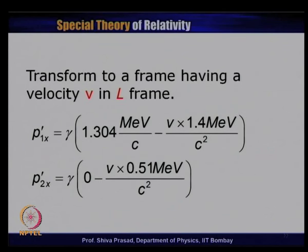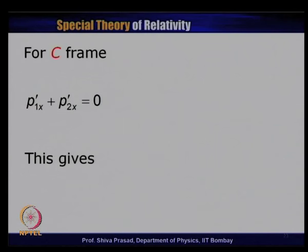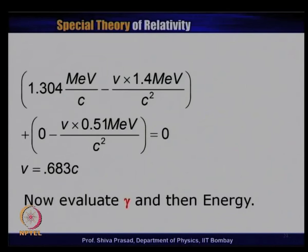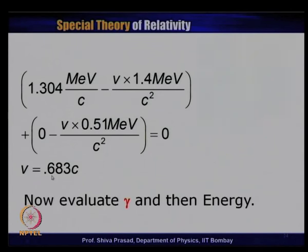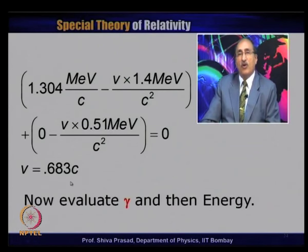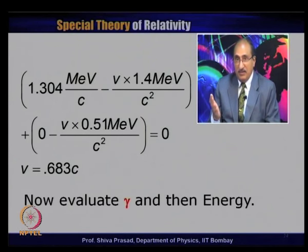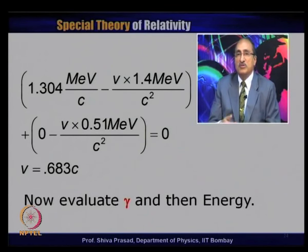The energy and momenta can be obtained in the laboratory frame using the standard energy-momentum transformation. One can also verify that energy and momentum are conserved in the L frame as well — they must be. This also illustrates an important point: the total energy in the L frame was 1.91 MeV, while in the C frame it is only 1.396 MeV. This confirms that designing experiments in the C frame is energetically favorable — you do not spend energy accelerating the center of mass.